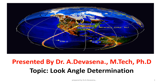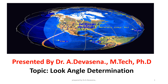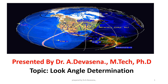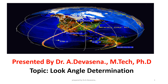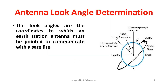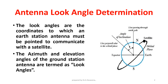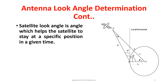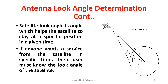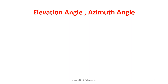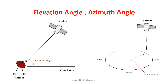Good morning. I am Devis Ena. In this lecture we are going to discuss about look angle determination. This topic is present in the subject satellite communication. Antenna look angle determination: the look angles are the coordinates to which an earth station antenna must be pointed to communicate with a satellite. The azimuth and elevation angles of the ground station antenna are termed as look angles. The satellite look angle is the angle which helps the satellite to stay at a specific position at a given time. If anyone wants service from the satellite at a specific time, the user must know the look angle of the satellite — the elevation angle and azimuth angle — which we are going to discuss further.